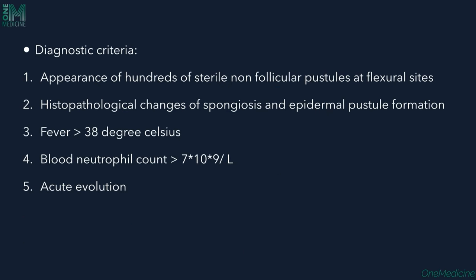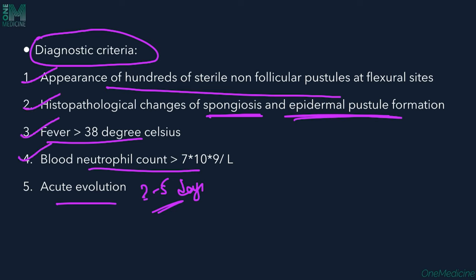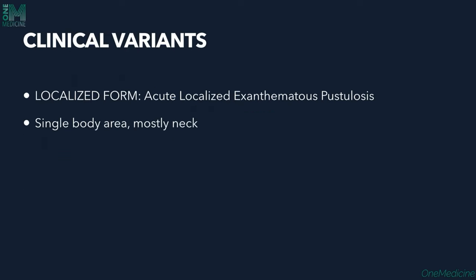The diagnostic criteria for AGEP include: appearance of hundreds of sterile non-follicular pustules; histopathologically, spongiosis and subcorneal epidermal pustule formation; fever greater than 38 degrees; elevated neutrophil count; and acute evolution — pustules appearing within two to five days of drug intake. These five criteria — pustule appearance, histopathology, fever, neutrophil count, and acute evolution — are used to diagnose AGEP.